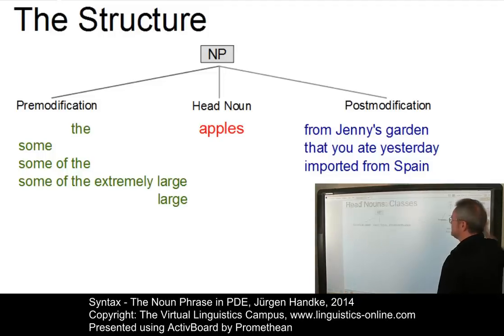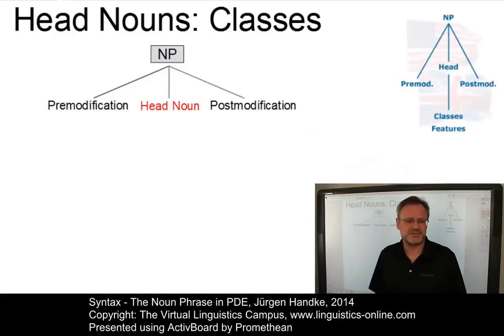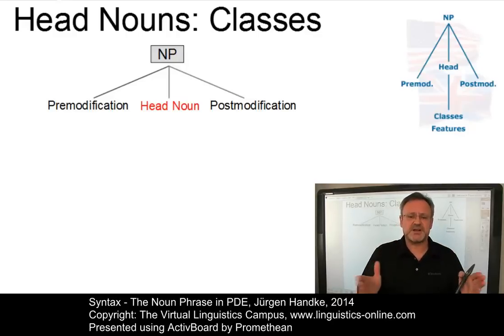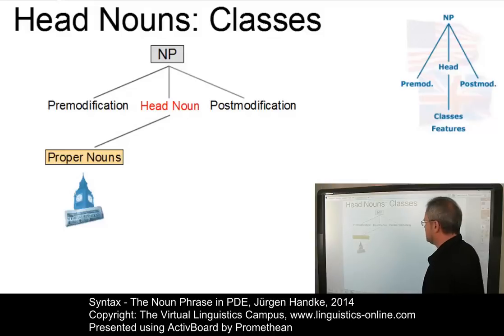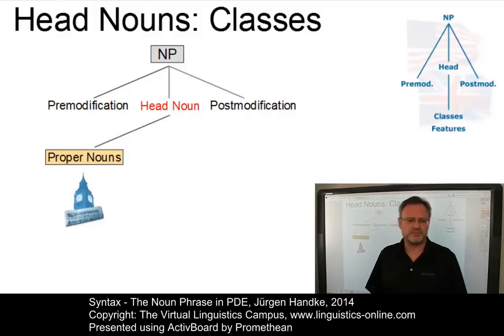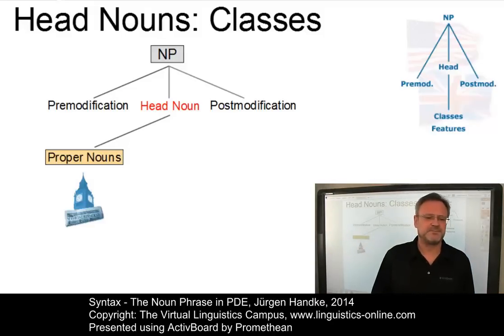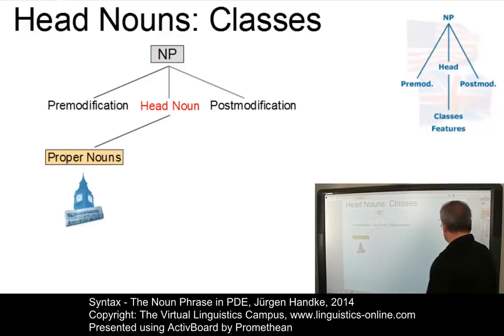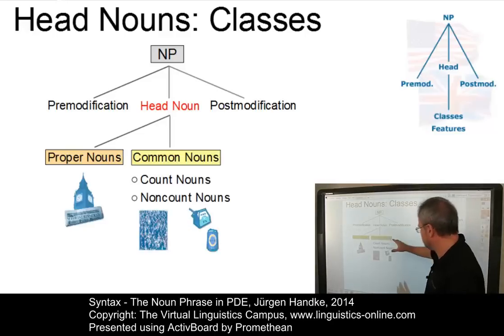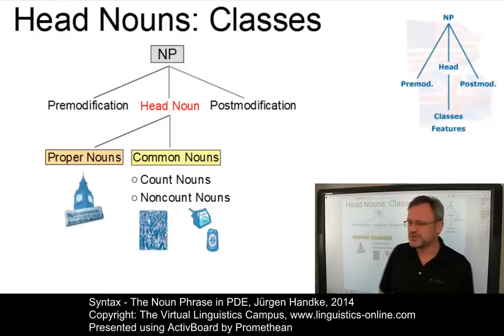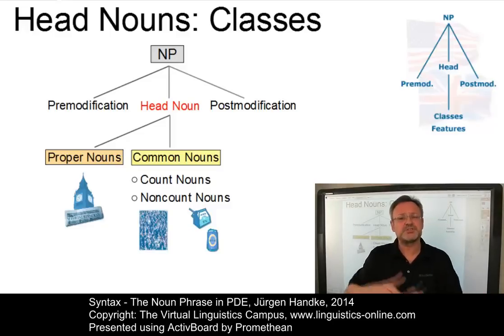Let's start with noun classes. Using grammatical criteria, two general subclasses of nouns can be identified: proper nouns — basically names such as 'John' or 'The Observer' — and common nouns, which in turn can be subdivided into count nouns and non-count nouns, such as 'person' — a count noun — versus 'beer' — a non-count noun.